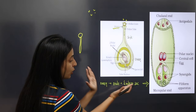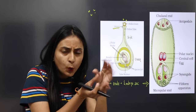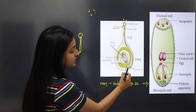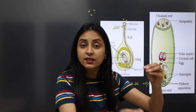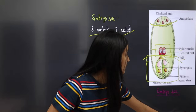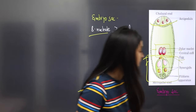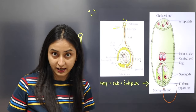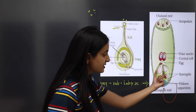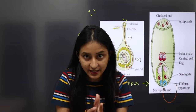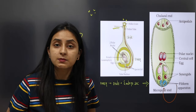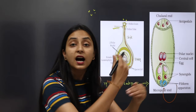The pollen tube travels through the style to the ovary, and reaches the micropylar end of the embryo sac. The synergid cells at the micropylar end have a structure called the filiform apparatus, which helps to direct the two male gametes so they can undergo fusion. The male gametes are then released into the cytoplasm.